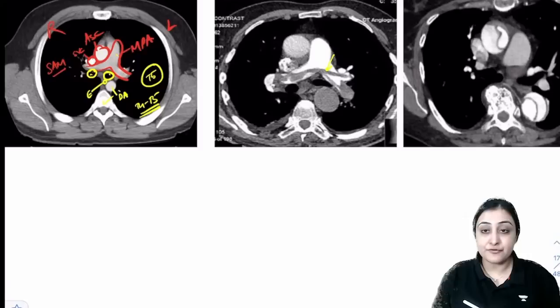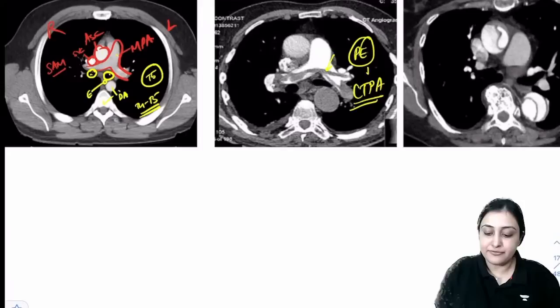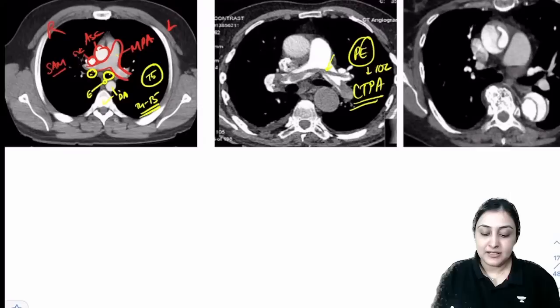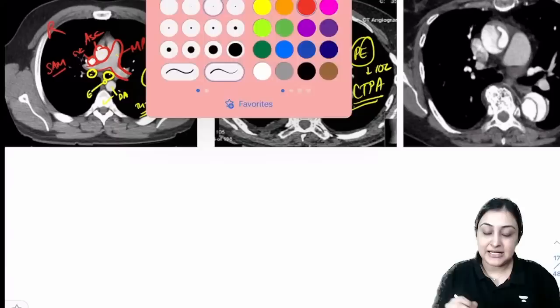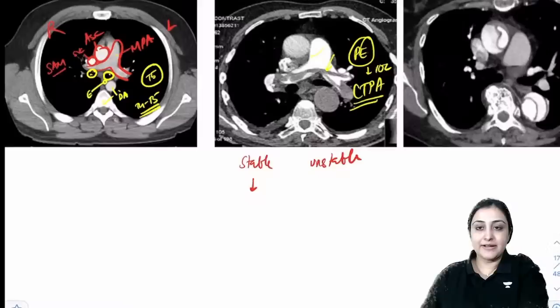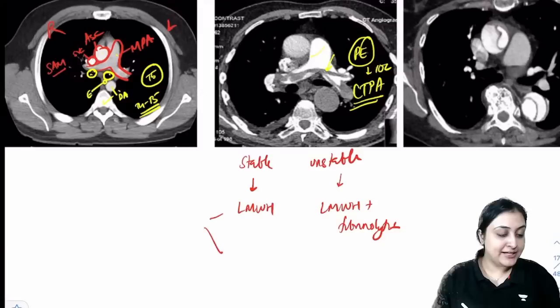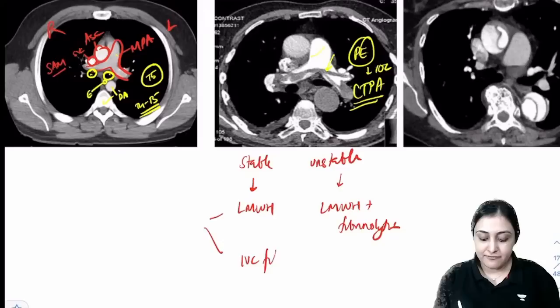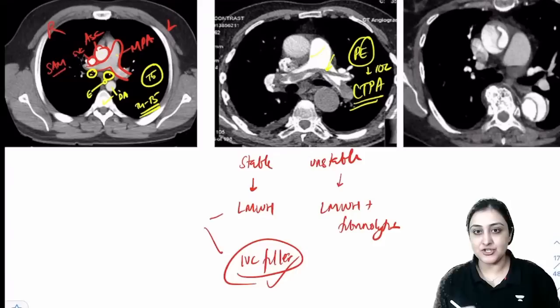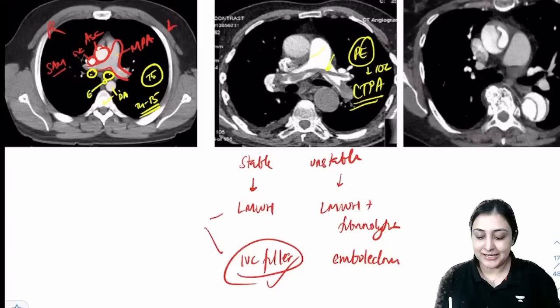Pulmonary embolism: CT pulmonary angiography (CTPA) is the investigation of choice — shows hypodense filling defect (clot) in the pulmonary artery. Management: stable patient → anticoagulation (LMWH); unstable patient → LMWH plus fibrinolytics. If anticoagulation contraindicated in a stable patient → IVC filter (secondary prevention). Unstable patient with clot → embolectomy (surgical or DSA).